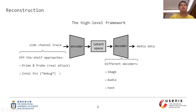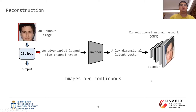The encoder takes side channels logged using off-the-shelf mechanisms as inputs, and the decoder outputs private media data. The decoder is specifically designed for each type of media data. In our scenario, we consider images, audios, and text.